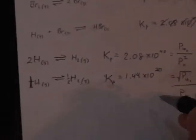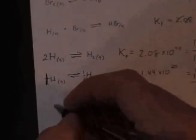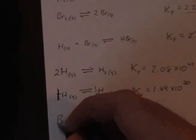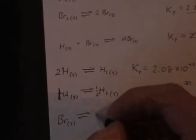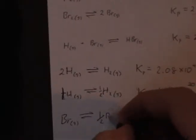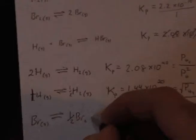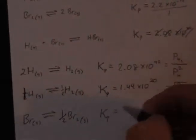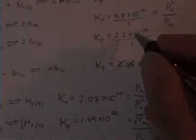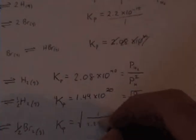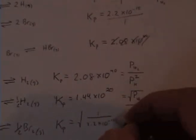So my Kp, let me go ahead and write this out. My Kp for Br in equilibrium with 1 half Br2 is equal to the square root of 1 over 2.2 times 10 to the minus 15.